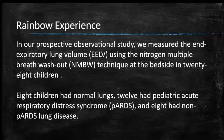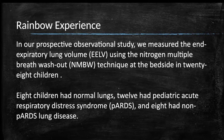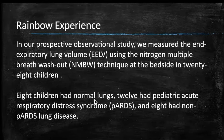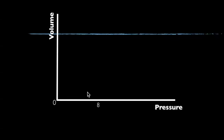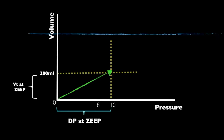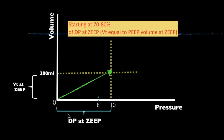We combined these two methods in an observational prospective study, measuring end-expiratory lung volume using the nitrogen multiple-breath washout technique at the bedside and using the PEEP step method to calculate stress. We had 41–42 patients: 8 children with normal lungs, 12 with pediatric respiratory distress syndrome, and 8 with non-ARDS lung disease. At zero PEEP we applied 6 ml/kg tidal volume; driving pressure was measured. Then PEEP was applied at 60–70% of the driving pressure at zero PEEP.